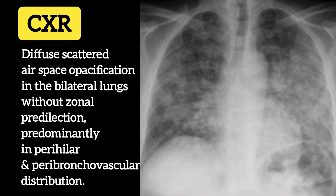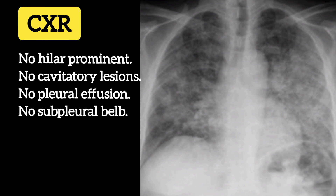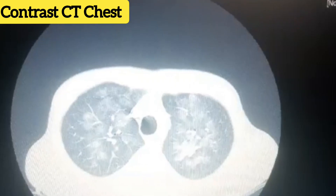Chest X-ray demonstrated airspace opacification in the bilateral lungs without zonal predilection, predominantly in perihilar and peribronchovascular distribution. No hilar prominence. No cavitatory lesion. No pleural effusion. No subpleural bulge.